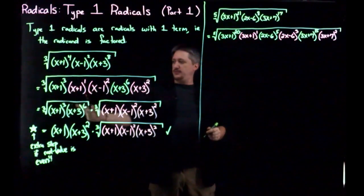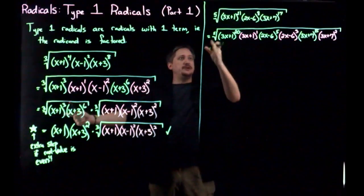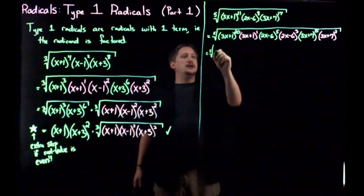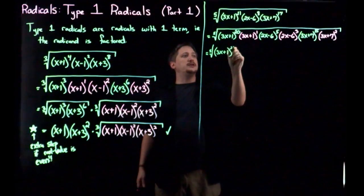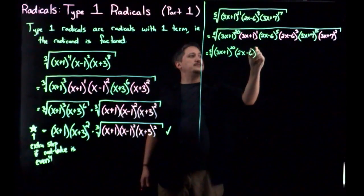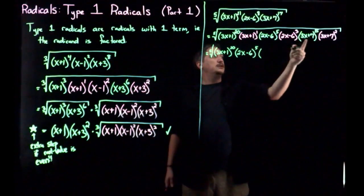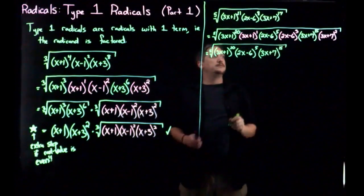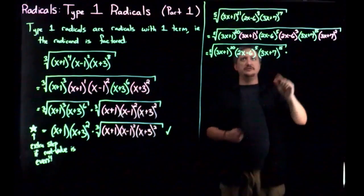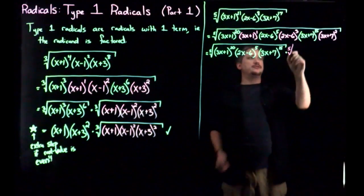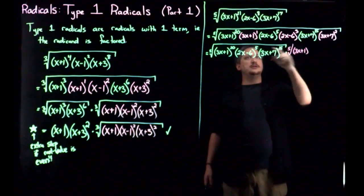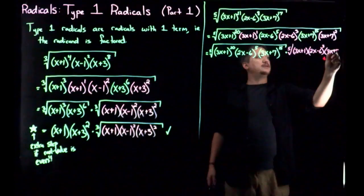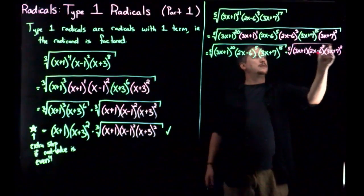So that was this equivalent step. The next one I'm going to move all of the nice multiples into the front, make it its own root, and then have all the leftovers in the other root. So I'm going to have fifth root of 3x plus 1 to the 20th, 2x minus 6 to the 5th, and 3x plus 7 to the 15th times fifth root of what's left over. So I'm going to have 3x plus 1 to the 1, 2x minus 6 to the 3, and 3x plus 7 squared.